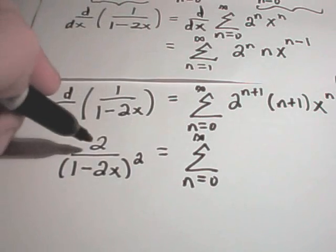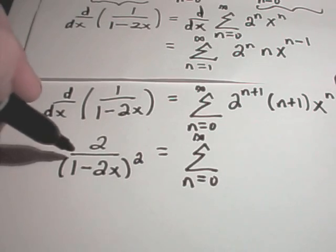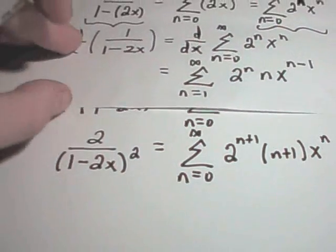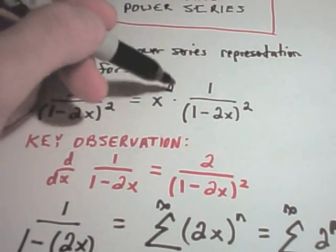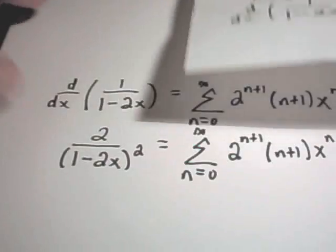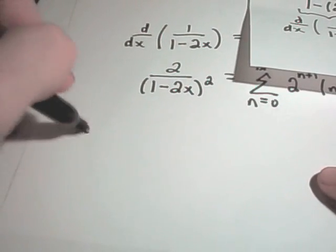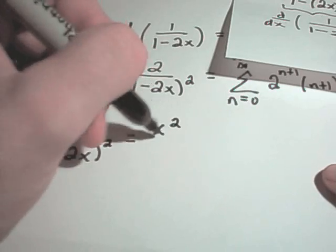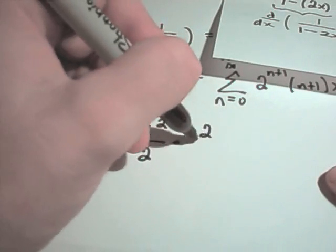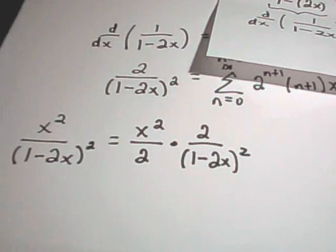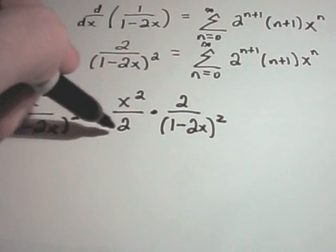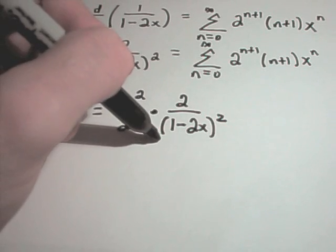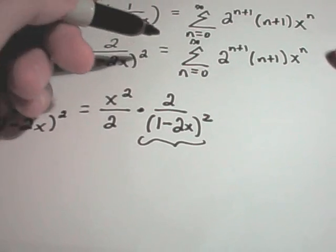So really I've got a power series representation for the function 2 over 1 minus 2x squared. I was interested in finding a power series representation for x squared over 1 minus 2x squared. And notice I can get x squared over the quantity 1 minus 2x squared by writing that as x squared over 2 times 2 over 1 minus 2x squared. If I multiply this out, my 2's cancel and I get x squared over 1 minus 2x squared like I wanted — and I now know a power series representation for this. It's the stuff right up here.